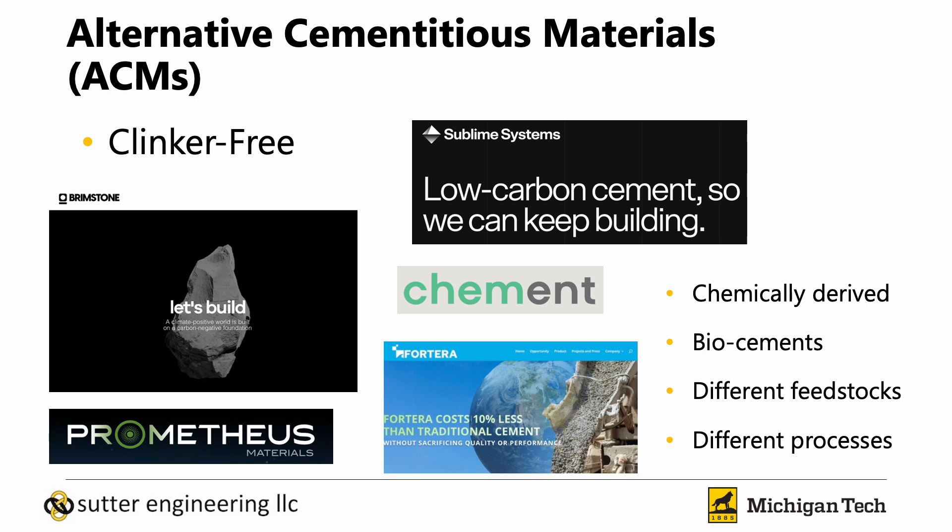Alternative cementitious materials generally fall into two categories. The first are commonly referred to as clinker-free. Some of these materials are made by producing clinker phases using alternative feedstocks, alternative processes, or both. Some are completely new materials based on completely new feedstocks. All of these use alternative processes, typically removing the calcination step, which is a major source of CO2 in Portland cement production. We have chemically derived materials and biologically derived materials.